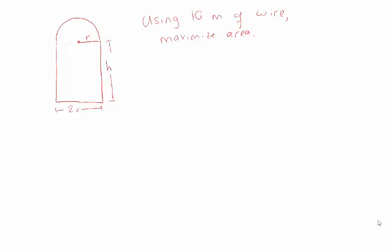To maximize the area, we can start by writing an equation for it. The area is going to be the area of the rectangle added to the area of the half circle. The area of the rectangle is base times height, which is 2r times h, and the area of the half circle is (1/2)πr². That's our area — this is what we want to maximize. But there are two problems: there are two different variables r and h, and we haven't applied any constraint. Without a constraint, the area could be infinitely large. We need to take into account that we only have 10 meters of wire.